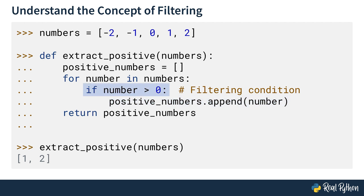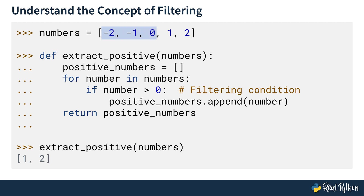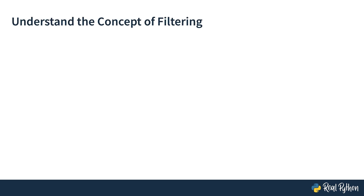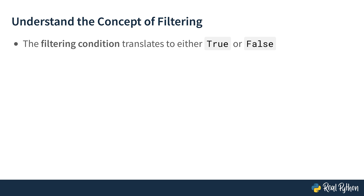Now this if statement is your filtering condition. Finally, once all the numbers have been checked, you return the positive_numbers list. When you run the extract_positive function with the numbers list as its input, you get one and two as the result. So negative two, negative one, and zero have been filtered out since their filtering condition evaluated as false. One and two have not been filtered out since their filtering condition translates to true — well, they are bigger than zero. In other words, the negative numbers and zero got filtered out.